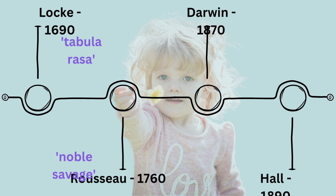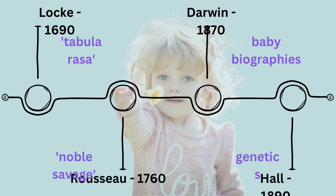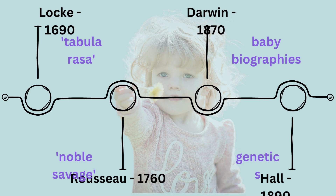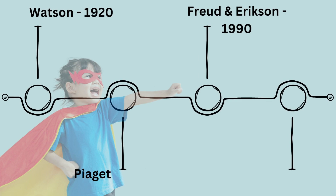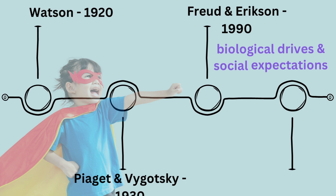The study of children's development gained momentum through the contributions of influential figures. Charles Darwin in the 1870s pioneered baby biographies, observing individual children intensively. G. Stanley Hall in the 1890s conducted large-scale norming studies, concluding that genetics contribute to development with child development unfolding automatically, while Freud and Erickson in the early 1900s found child development was driven by a resolution of conflict between biological drives and social expectations.